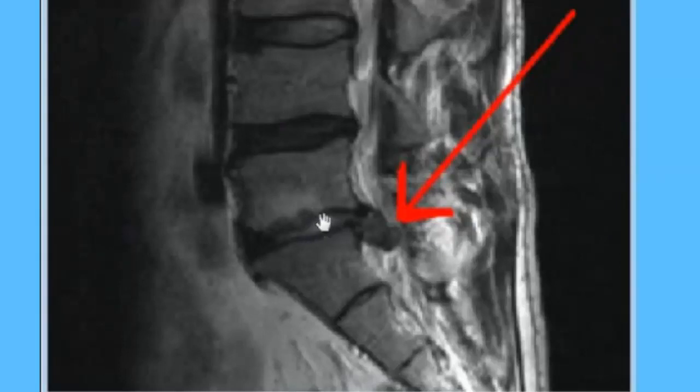L5-S1 is moderate to severe. Disc space is lost, or disc height is lost, and a massive disc herniation going on here. So when a disc bulge advances from a bulge to a bigger protrusion, we can call it a disc herniation at that point or a disc protrusion.